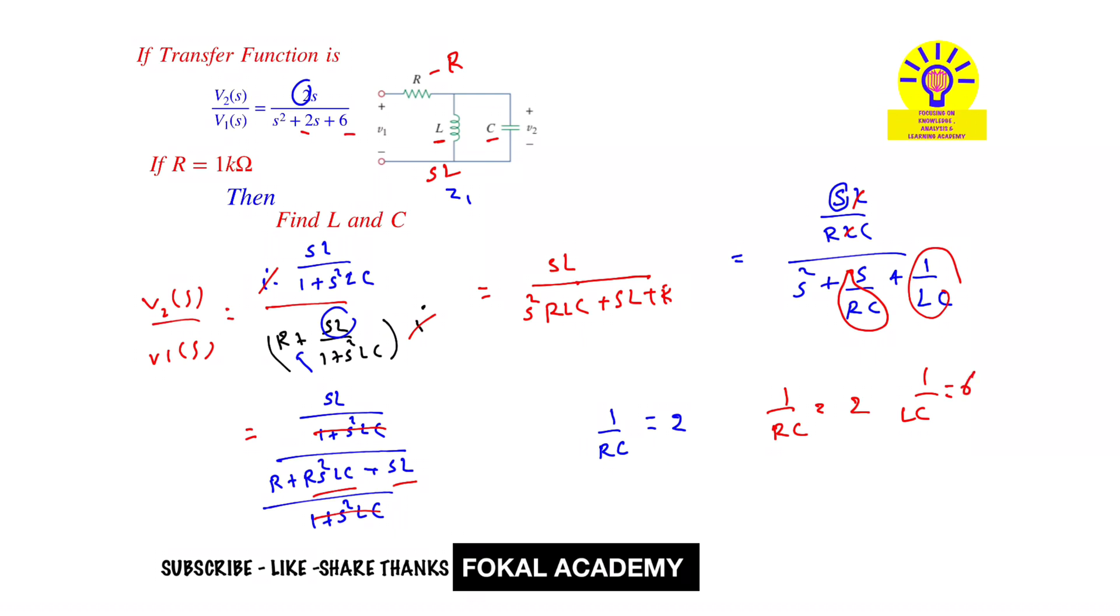R is already given, that is 1 kilohm. Now substitute here R value in the equation, then we get C value. So from this equation, 1/(2R) = C. So I take C to the right hand side and 2 to the left hand side. Now substitute the values: 1/(2 × 1k). So it becomes 500 microfarad. This is the capacitance value.